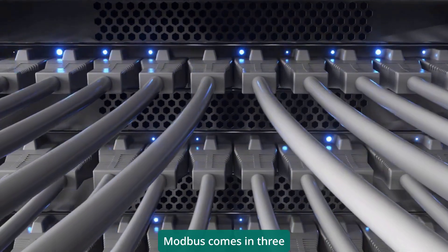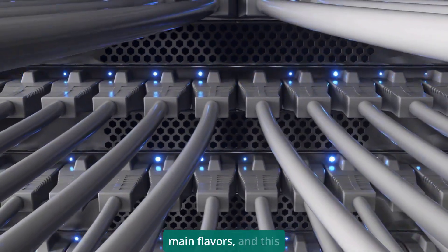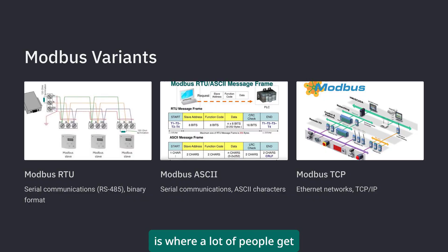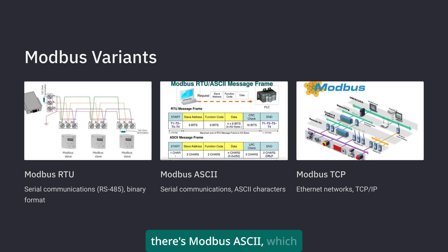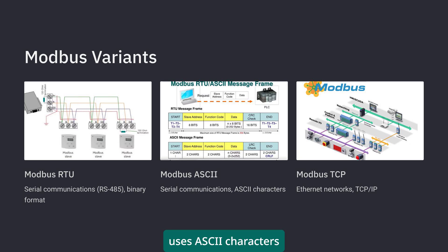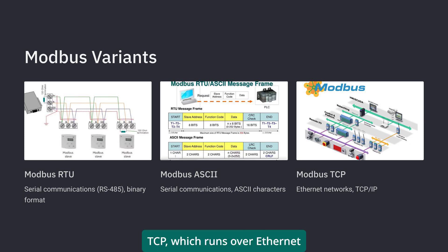Modbus comes in three main flavors, and this is where a lot of people get confused. You've got Modbus RTU, which runs over serial communications like RS-485. Then there's Modbus ASCII, which is basically the same thing but uses ASCII characters instead of binary. And finally, Modbus TCP, which runs over Ethernet networks.